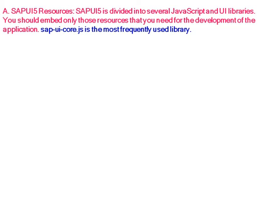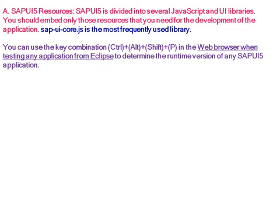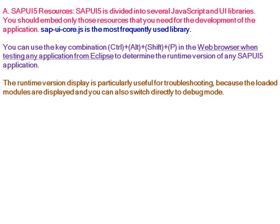SAPUI5 is divided into several JavaScript and UI libraries. You should embed only those resources that you need for the development of the application. SAPUI5 is the most frequently used library. You can use the key combination CTRL + ALT + SHIFT + P in the web browser when testing any application from Eclipse to determine the runtime version of any SAPUI5 application. The runtime version display is particularly useful for troubleshooting because the loaded modules are displayed and you can also switch directly to debug mode.